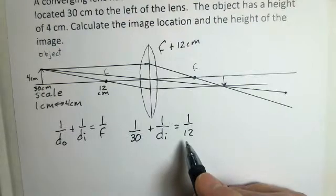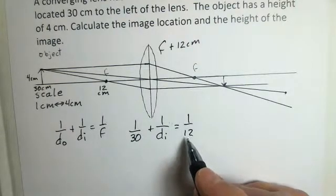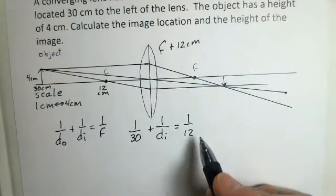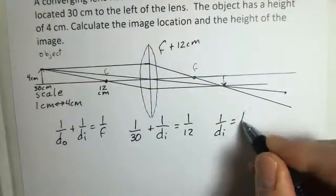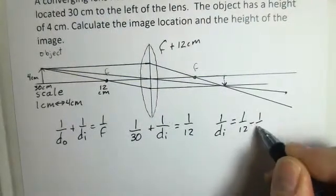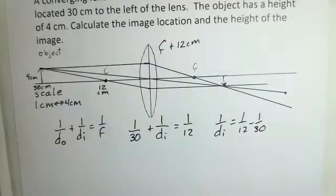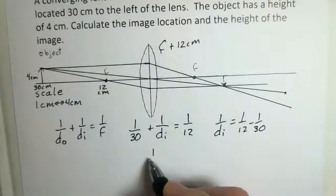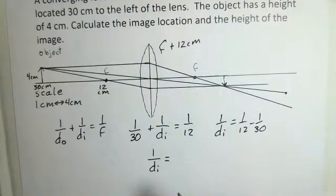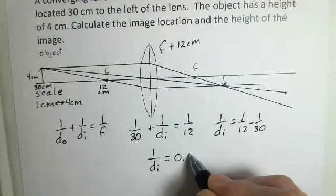Time to pull out the calculators and solve this. I start by subtracting the one over 30 from both sides. One over DI equals one over 12 minus one over 30. Pulling out the calculator, one over DI I found to be 0.05.